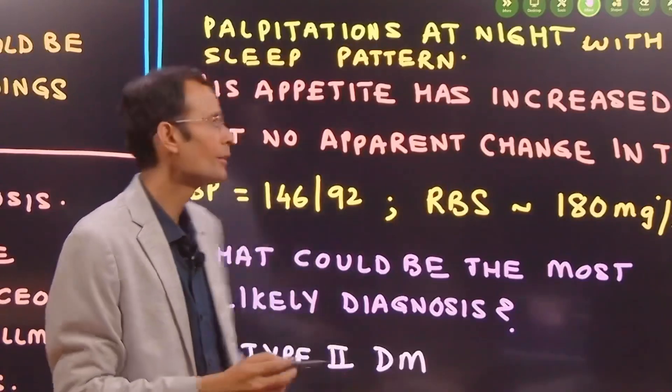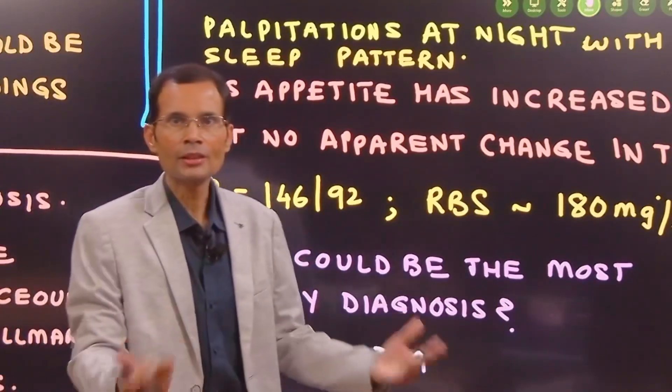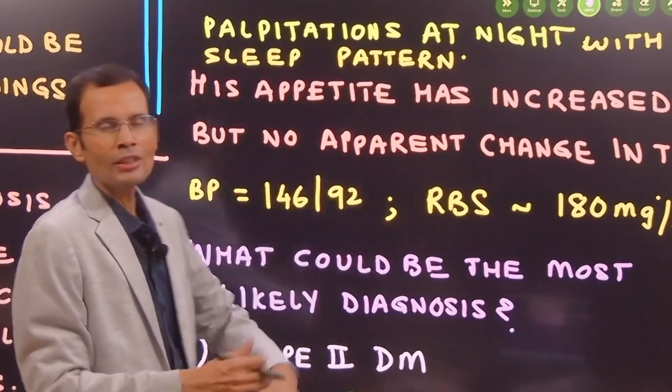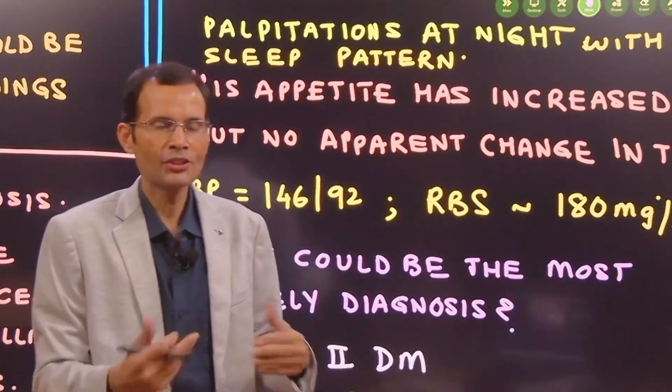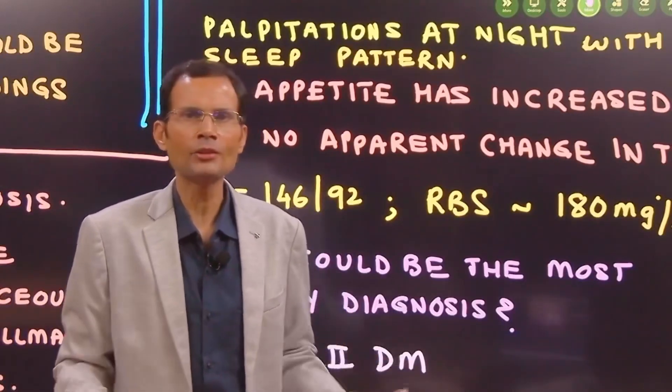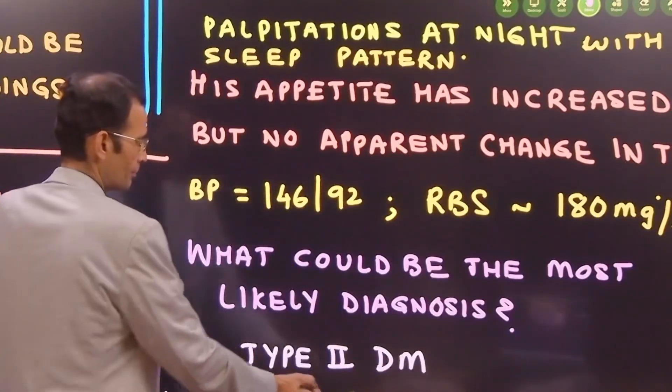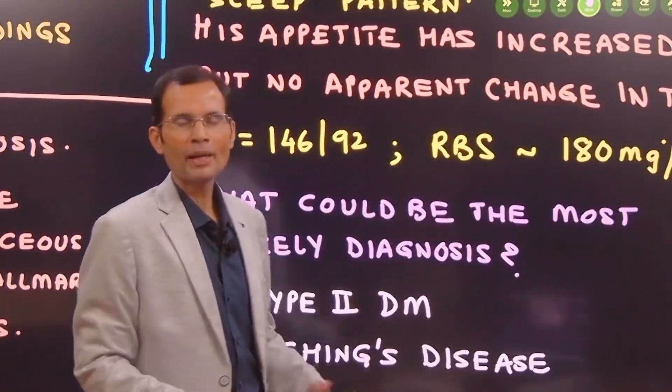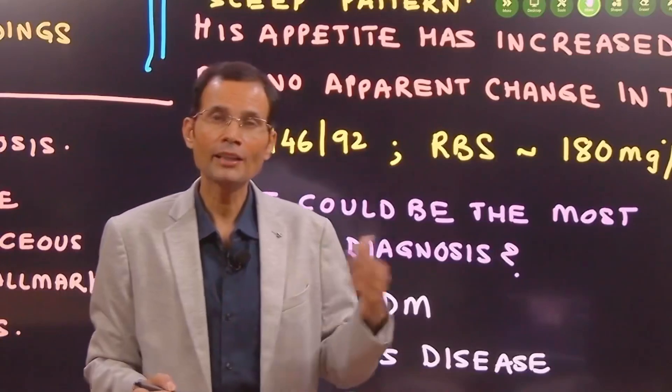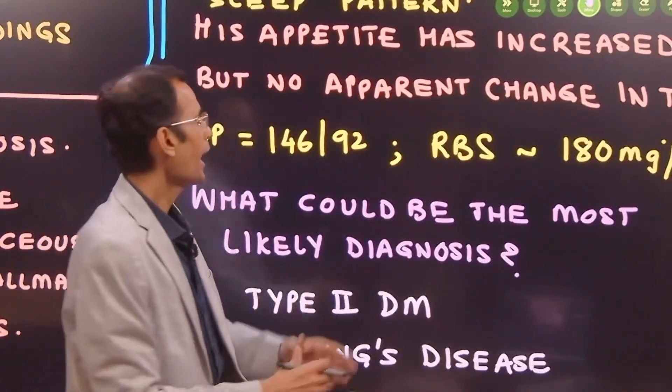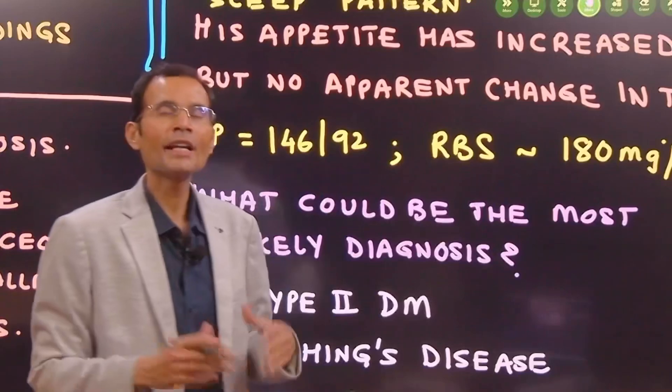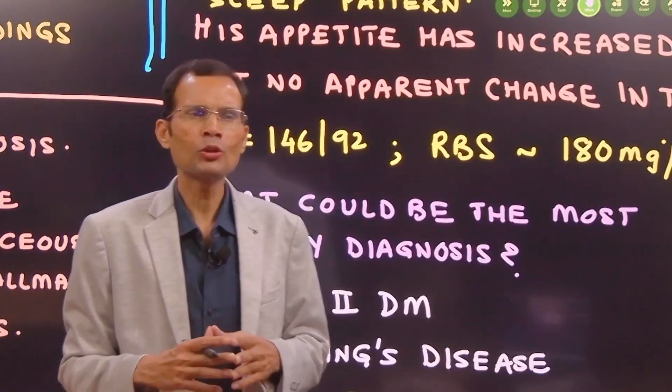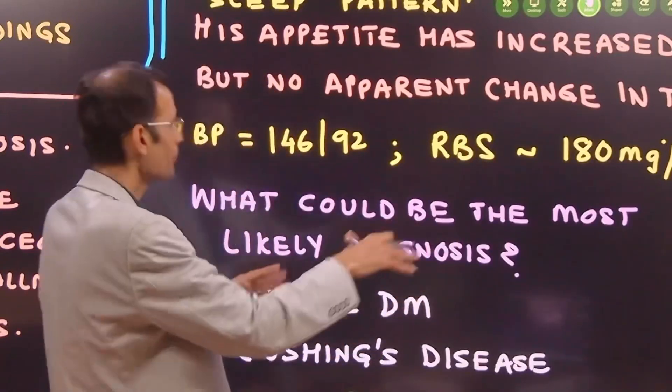Now that's interesting. His appetite has increased as the patient himself says. But there is no apparent change in the thirst when the clinician inquired about the thirst. Do you feel thirsty? The patient said no. So blood pressure 146 by 92. That could be borderline high or that is high. And random blood sugar 180 milligrams percent. Again, it is less than 200. So let's say again, borderline acceptable.